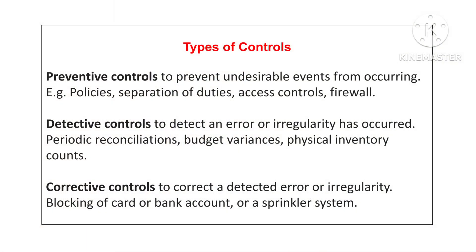Detective controls detect an error or irregularity which has already occurred. Examples include periodic reconciliations, budget variance analysis, and physical inventory counts. Corrective controls correct errors or irregularities — for example, blocking a card or bank account when a suspicious transaction occurs, or a sprinkler system that activates when a smoke detector identifies smoke, immediately putting out the fire.